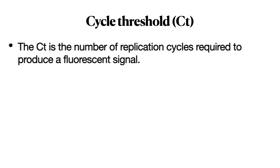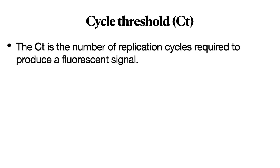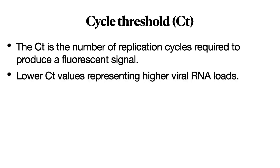The cycle threshold, or CT, determines whether the patient is positive or negative. The CT is the number of replication cycles required to produce a fluorescent signal — essentially how many times cycling must be done to get a positive fluorescent signal. The lower the CT value for a particular patient, the higher the viral load, meaning with a larger viral load you get a positive signal within fewer cycles.